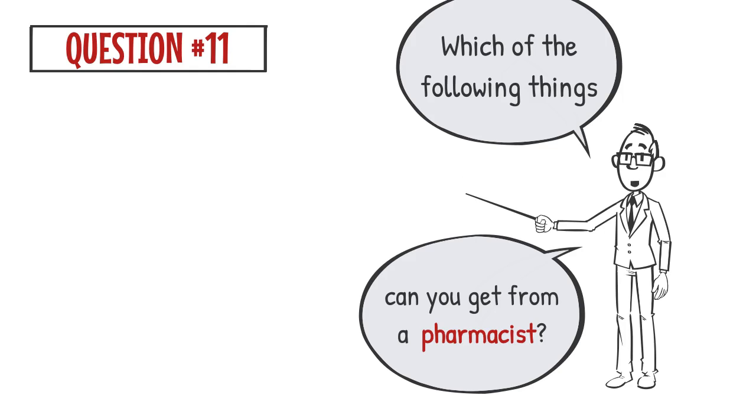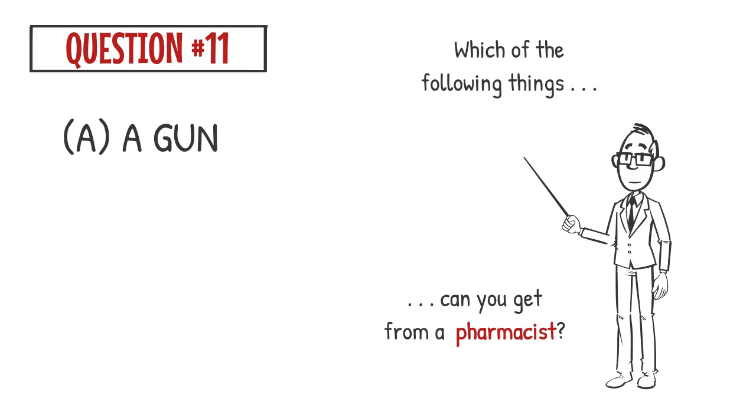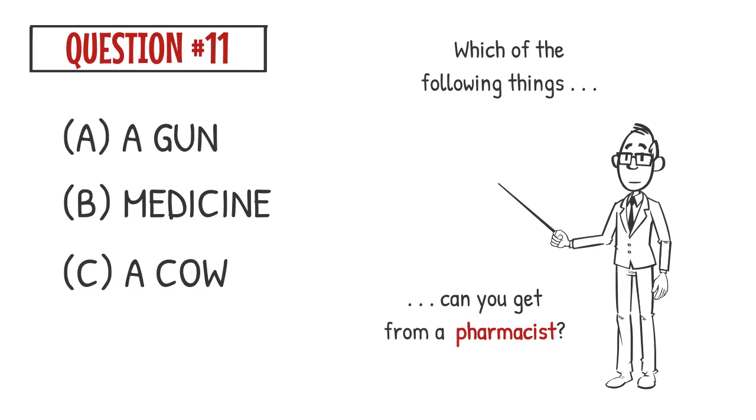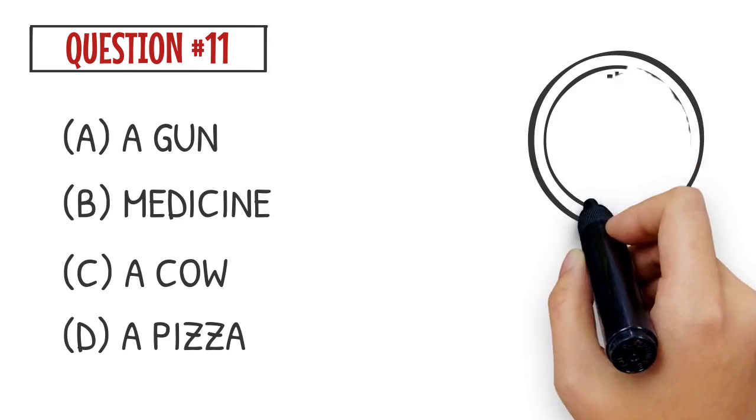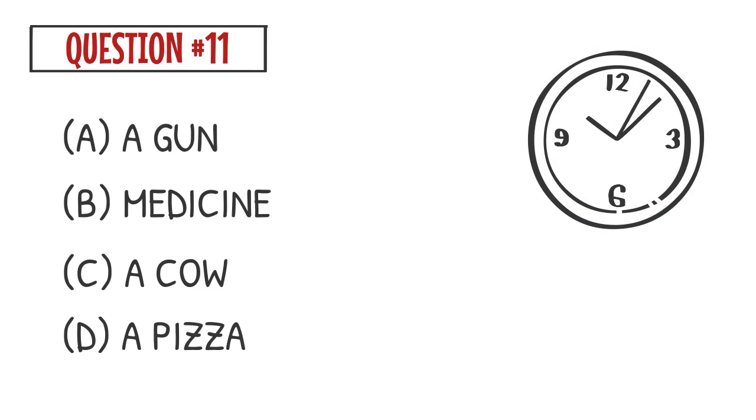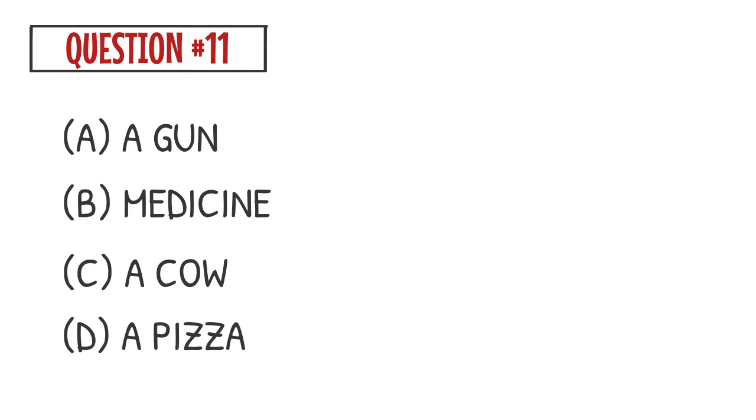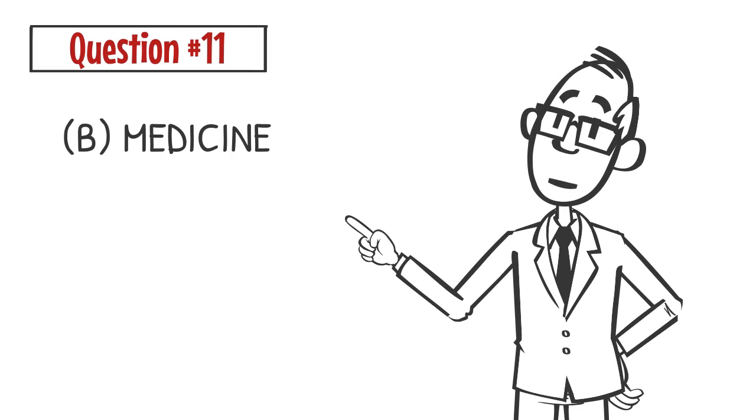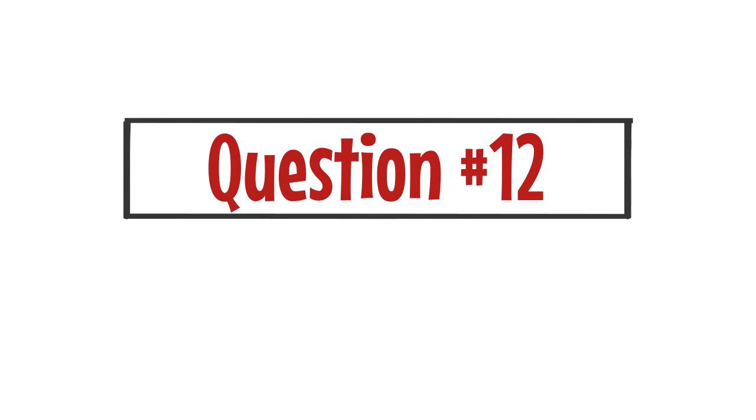Question number 11: Which of the following things can you get from a pharmacist? A. A gun B. Medicine C. A cow D. A pizza. The correct answer is B. You can get medicine from a pharmacist.